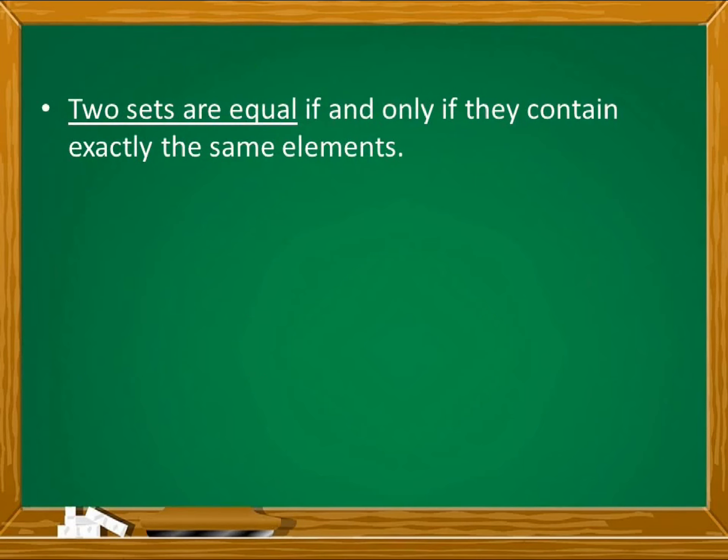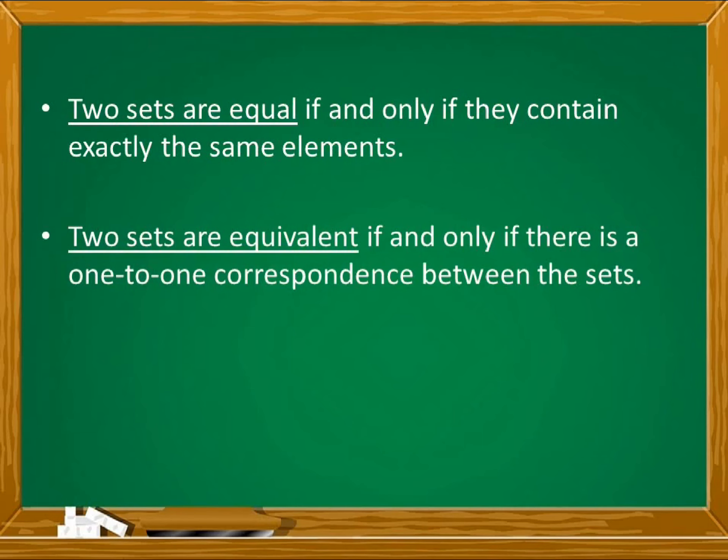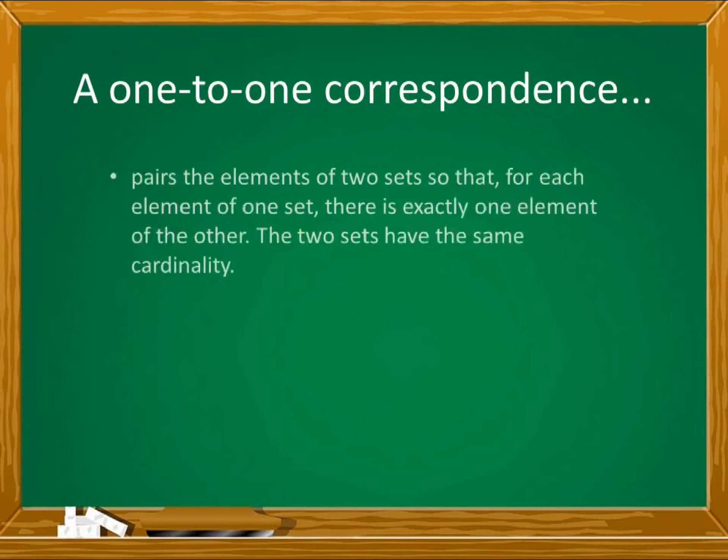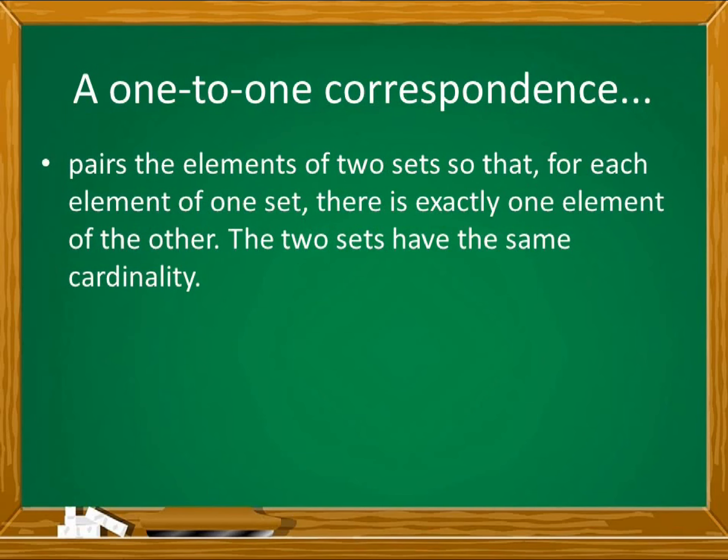Again, two sets are equal if and only if they contain exactly the same elements. Parehong-pareho dapat ng mga elements. And two sets are equivalent if and only if there is a one-to-one correspondence between the sets. A one-to-one correspondence pairs the elements of two sets so that for each element of one set, there is exactly one element of the other. The two sets have the same cardinality.